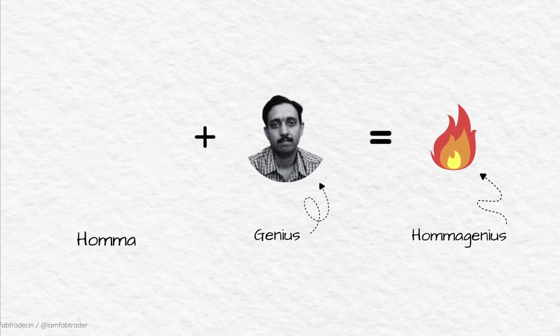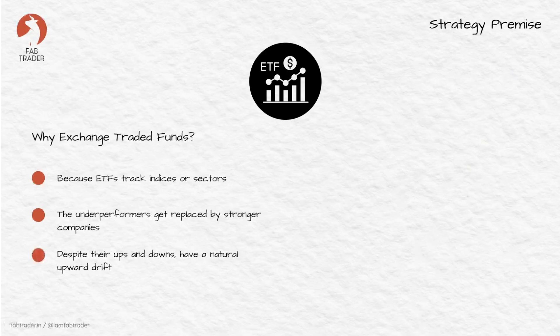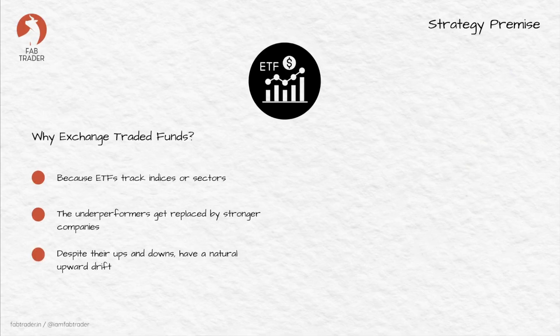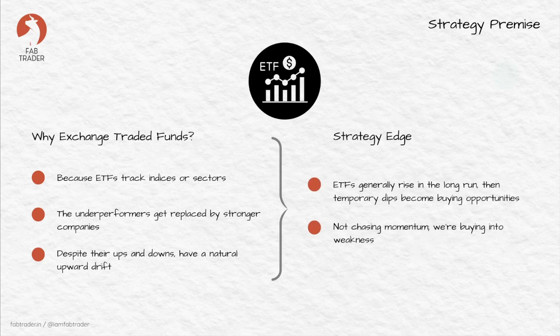The idea behind the strategy is refreshingly simple. It is built on the belief that ETFs — exchange traded funds — being baskets of stocks, tend to go up over time. This is primarily because ETFs don't track individual stocks; rather they track broad indices, sectors, or themes. The underperformers get replaced by stronger companies, and economies despite their ups and downs have a natural upward drift. So if we accept that ETFs generally rise in the long run, then temporary dips become buying opportunities — and that's exactly the edge of the strategy.